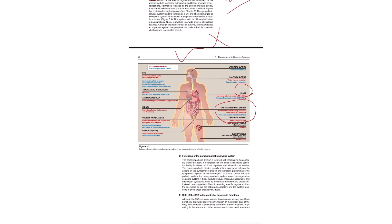When bronchodilation occurs, this is coming from the sympathetic system. Additionally, since appetite is suppressed and GIT is not functioning, it requires less blood, so the vessels supplying the GIT will constrict. Meanwhile, vessels supplying peripheral skeletal muscles will undergo vasodilation towards the periphery so that energy is provided and we can run faster.